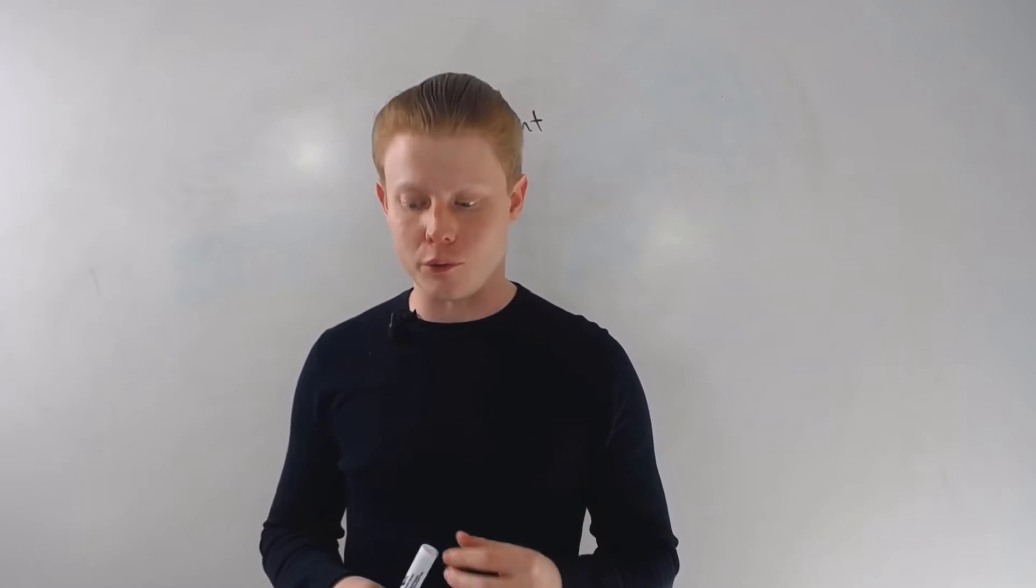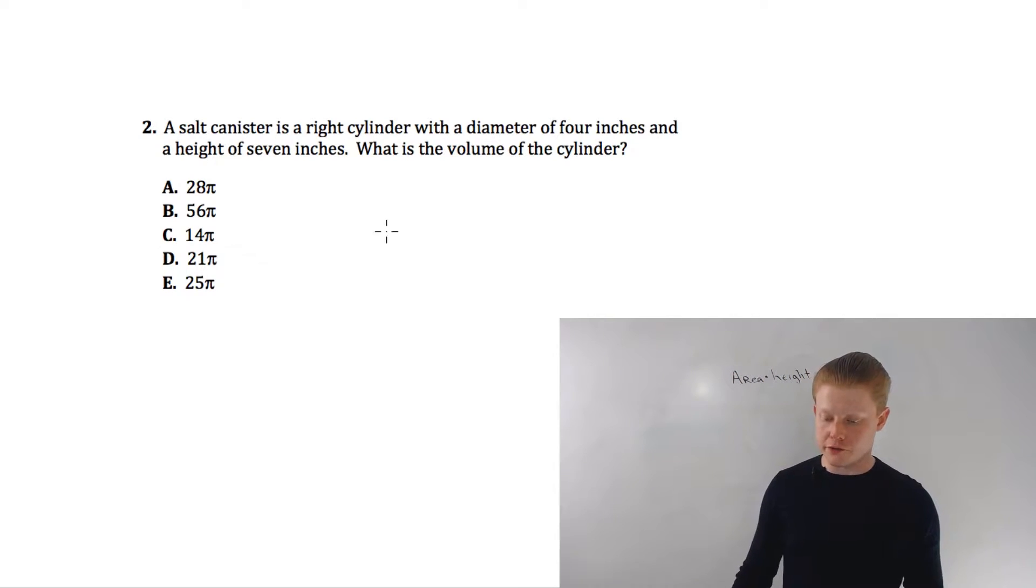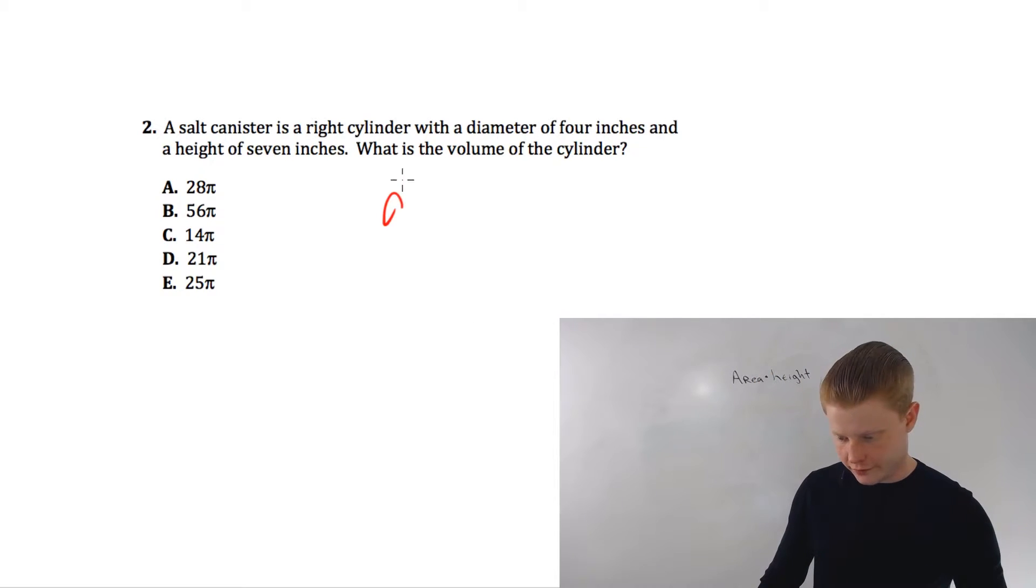Let's look at an ACT example. I'm going to blow it up in full screen, we'll talk a little bit more about it. Okay, here we go. We got this salt canister question - it's a right cylinder that's defined for us, diameter 4 inches, again I'm going to write everything down, height 7, and they want volume.